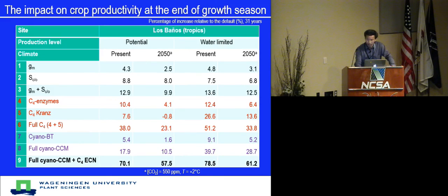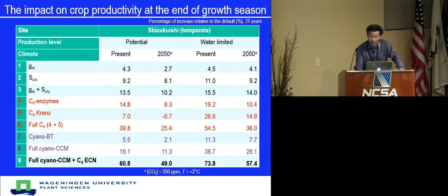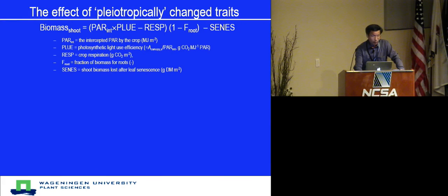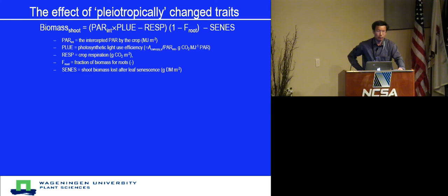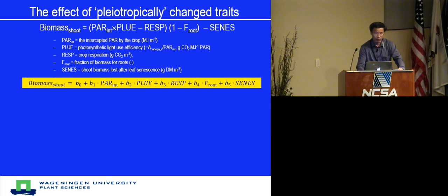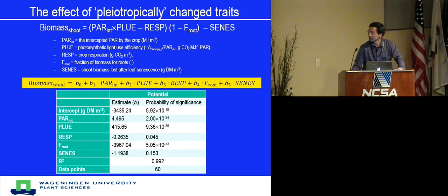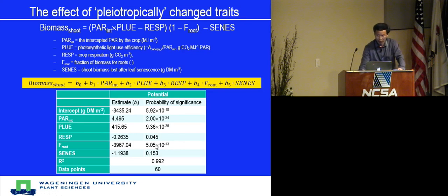Simulations were conducted for tropical, subtropical, and temperate environments. In introducing photosynthesis improvement mechanisms, not only light use efficiency was improved — many other processes changed as well, like light interception, respiration, partitioning to root, and senescence. It is important to examine whether those biologically changed secondary processes also influence the final predicted biomass. The primary change in light use efficiency has the most significant effect, but secondary changes — like light interception and partitioning — also have a large influence, indicating that all these individual processes are interconnected.